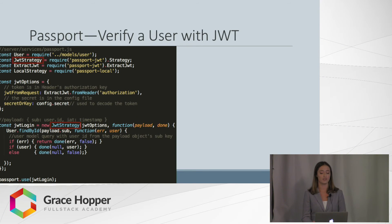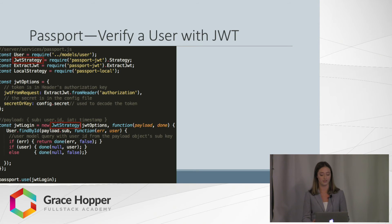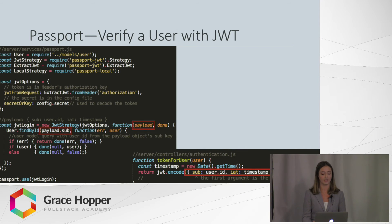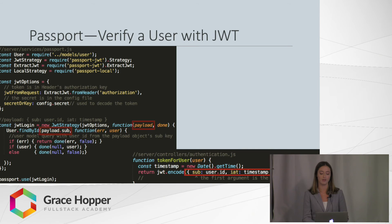With the token strategy, a specific constructor is imported from the passport library. The JWT strategy constructor takes an options object that has both the token and the key. The token is extracted from the header's authorization property, and the key is the secret string from your config file. The callback function of the JWT strategy takes a payload with the properties that were encoded onto it from the token for user method.